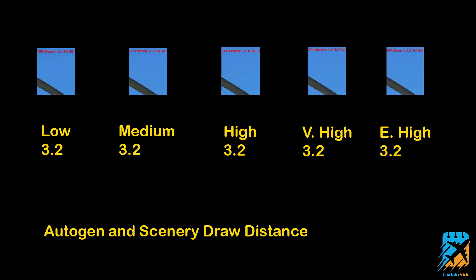Moving over to the next slider down, auto-gen and scenery draw distance. Hey look, we got low at 3.2, medium at 3.2, high at 3.2 gigs, very high at 3.2 gigs, and extremely high at 3.2 gigs. Yeah, that's kind of interesting. Maybe because the textures are already loaded and it's just drawing stuff? Obviously you're going to have a much bigger frame rate hit at extremely high versus low because it's drawing more triangles.